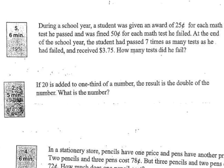Alright. The next one says, let's do a different color. Let's do red. Alright. If 20 is added to one-third of a number, the result is the double of the number. What is the number?